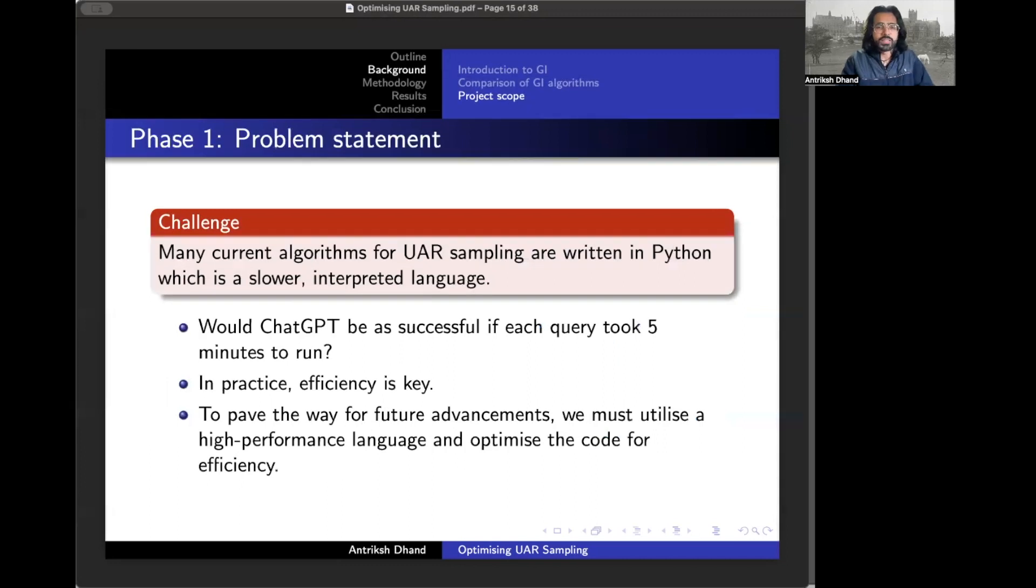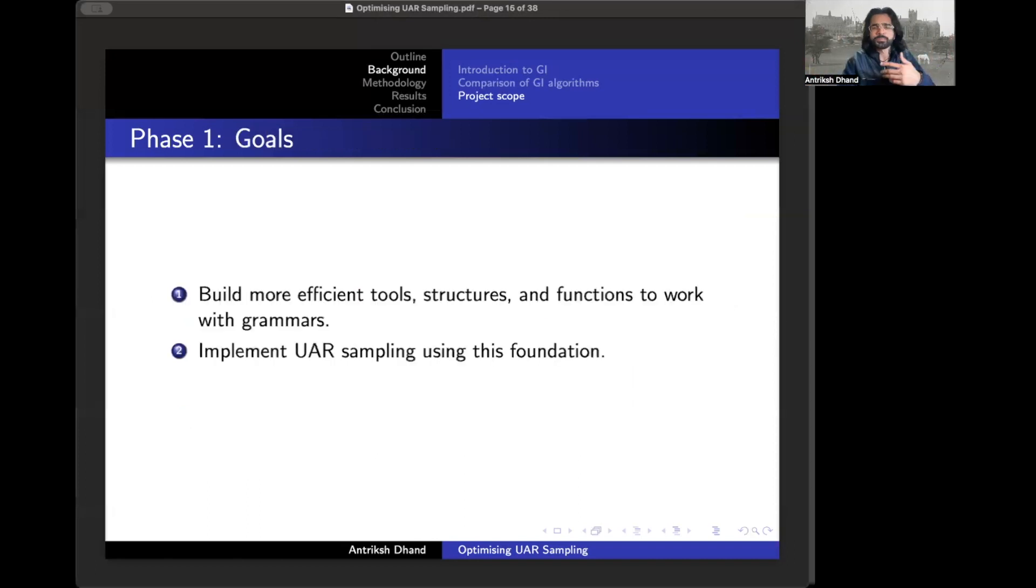So what's the problem here? No one likes slow algorithms. And when you're working with grammars which contain thousands of rules and tens of thousands of strings, efficiency becomes even more critical. The main issue we face here is that most current algorithms for uniform at random sampling are written in Python, which is a slower interpreted language. But we needed something faster and more low level, especially if we were to build the foundation for an entire library of functionality.